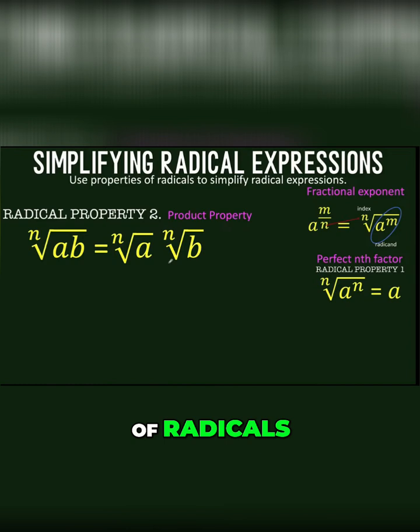And when we do multiplication of radicals, we are going to use the converse of this property because you will be given two or more radicals and your task is to simplify that as one radical.